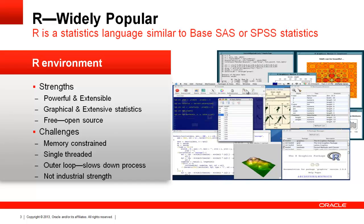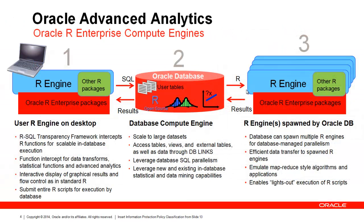Oracle R Enterprise maps your R scripts to matching in-database SQL equivalents. It overcomes the memory constraints, the single-threaded nature, and such of open-source R, and it leverages and takes advantage of the strengths of our in-database SQL statistical and data mining functions. We use the R-to-SQL transparency framework, which intercepts the R functions and the basic R language and maps that transparently to equivalent SQL functions, so you get the massive scalability and parallelism of the database.